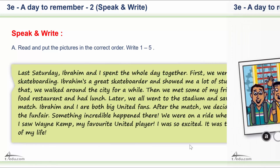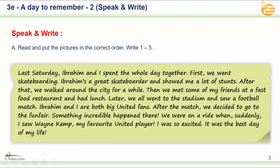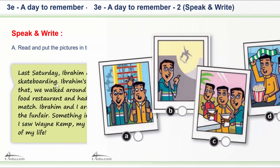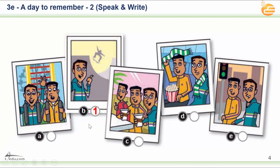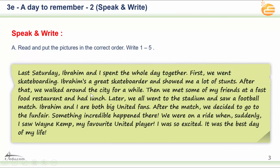Excellent! Let's look at these pictures. Which one is the first one? Very nice — picture B. We have the sentence 'First, we went skateboarding,' so B is number one. Number two: which one is number two — A, C, D, or E? Excellent, it is E. E is number two. Let's go back to confirm: 'After that, we walked around the city for a while, then we met some of my friends at a fast food restaurant and had lunch.'